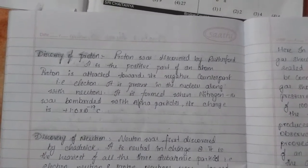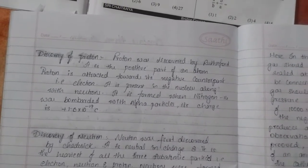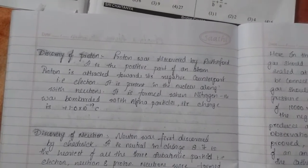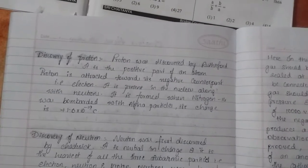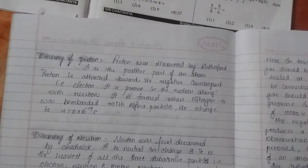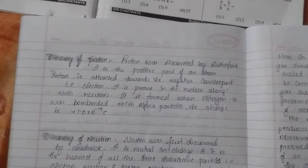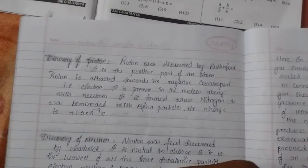And it is present in the nucleus along with the neutrons. And it is formed when nitrogen-14 was bombarded with alpha particles, that is helium dipositive particles. That means when two of the electrons of the helium atom are donated, it forms helium dipositive atom. Understood? And its charge is plus 1.6 into 10 power minus 19 coulombs.